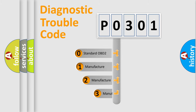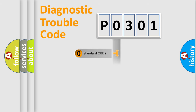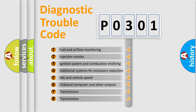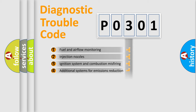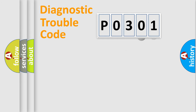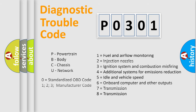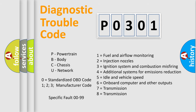If the second character is expressed as zero, it is a standardized error. In the case of numbers 1, 2, or 3, it is a more manufacturer-specific error expression. The third character specifies a subset of errors. Only the last two characters define the specific fault of the group. Note that this division is valid only when the second character is zero.